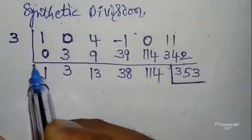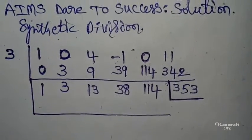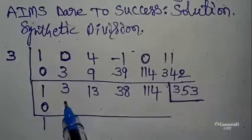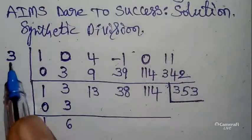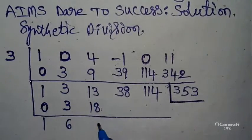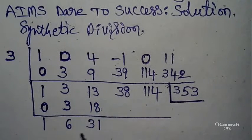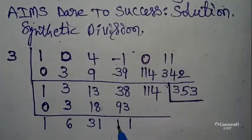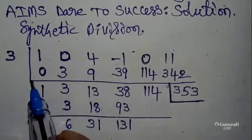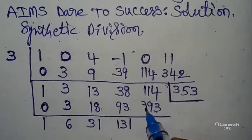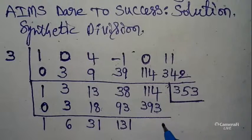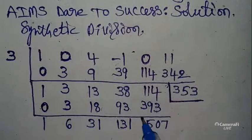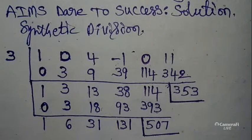Now take a second box with the same concept. First place write 0. 1 + 1 = 2 — wait, 1 + 0 = 1, cross multiply 1 × 3 = 3. Next: 3 + 3 = 6, cross multiply 6 × 3 = 18. Addition: 8 + 3 = 11, giving 31 — wait, cross multiply 31 × 3 = 93. Next addition gives 131. 131 × 3 = 393. Addition: 114 + 393 = 507. Keep this value.